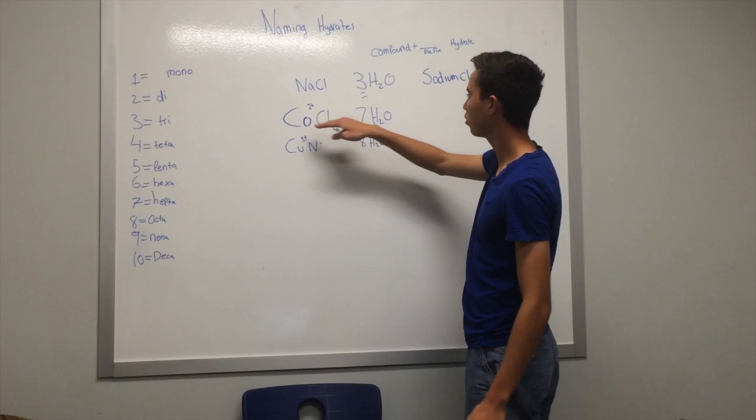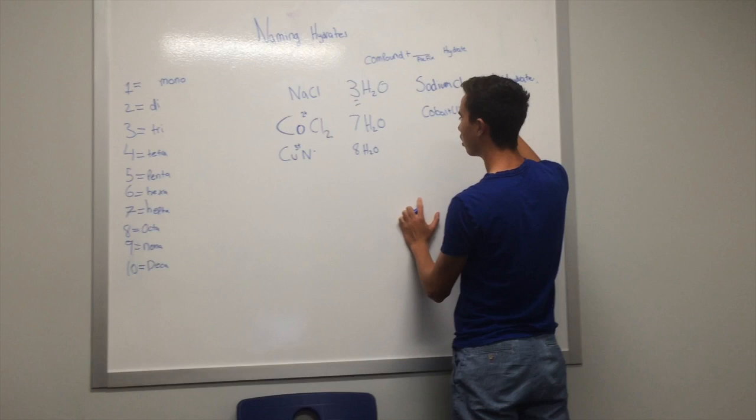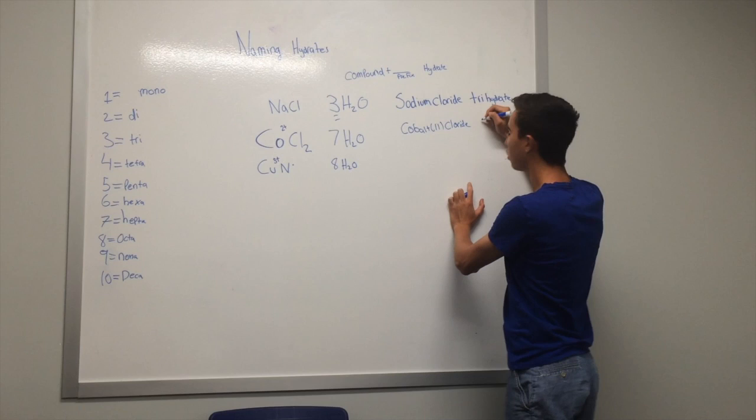7 stands for hepta, so it would be cobalt 2 chloride heptahydrate.